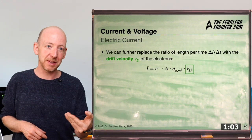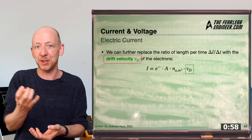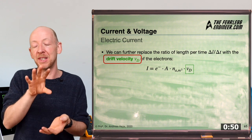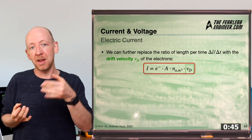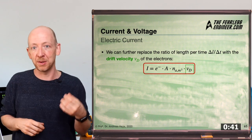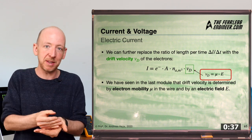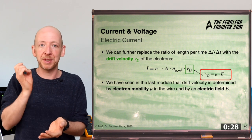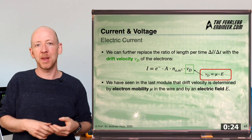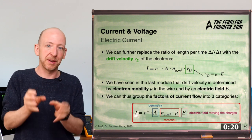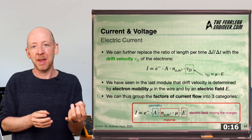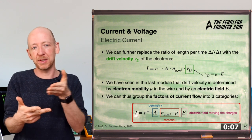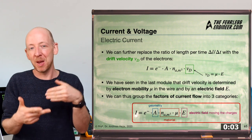If we replace the ratio of wire length and time by a new expression Vd — which stands for the drift velocity of electrons through the wire — we get the current equation shown here. We can further replace Vd by the product of electron mobility and electric field E, since the speed of electrons depends on the strength of the electric field and a material property of the conductor. The resulting equation groups the factors of current into geometrical properties, material properties, and the electric field which provides the energy to move the charges.